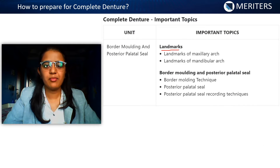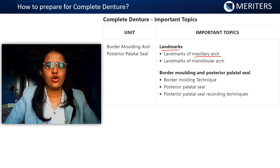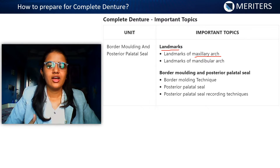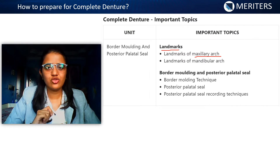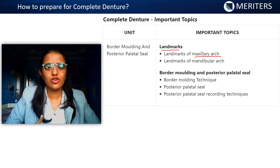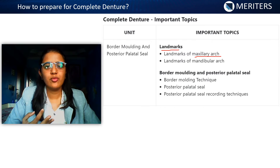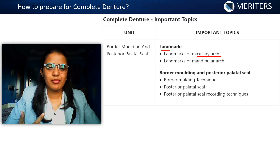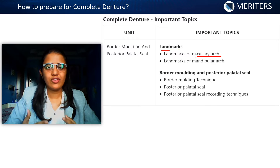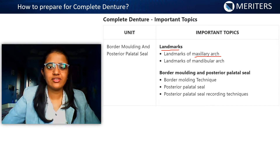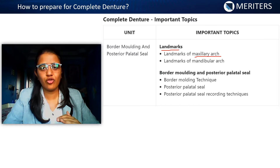Now we move on to landmarks. The landmarks of the maxillary arch involve your limiting area, primary stress-bearing area, secondary stress-bearing area, and relief area. For the maxillary arch, you need to know which muscles are attached to your frenums — for example, the buccal frenum — their actions, which causes forward movement and which causes backward movement. You should also know about hamular notch, posterior palatal seal area, boundaries of PPS, anterior and posterior vibrating lines, functions of recording PPS, modifications in PPS functions, and the different types of soft palate.